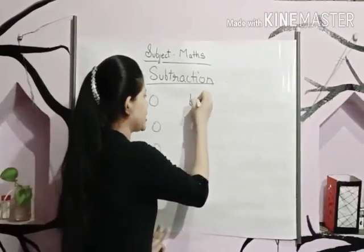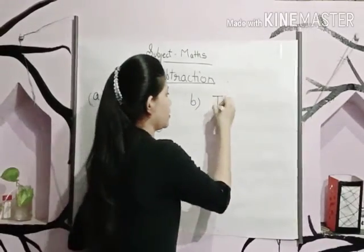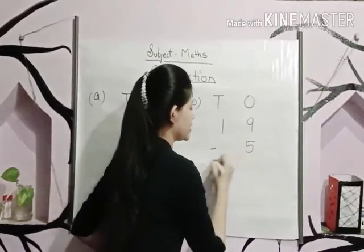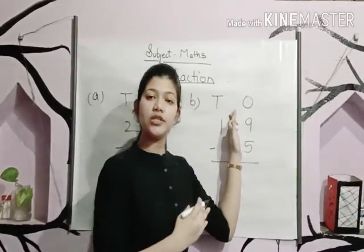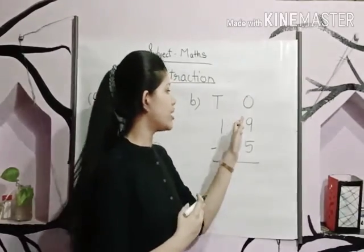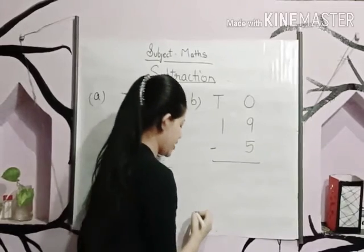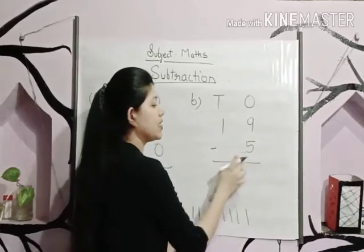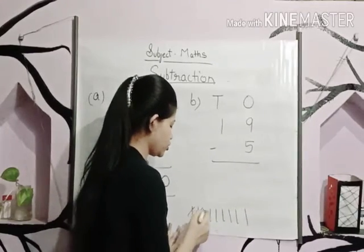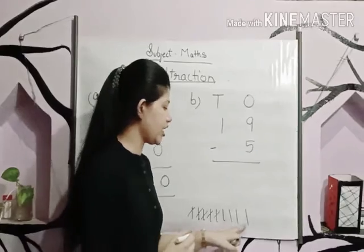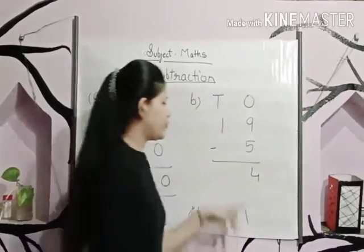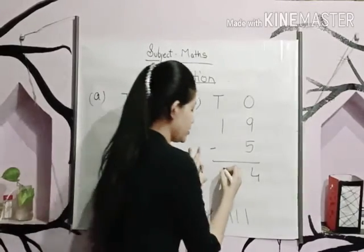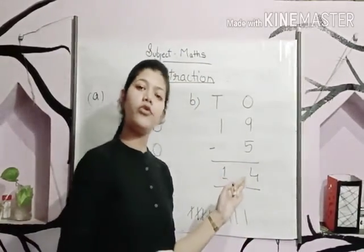Let's have one more example: nineteen minus five. Let's subtract the ones column first — nine minus five. We draw nine lines and subtract five, leaving four. Now there is no number to subtract in the tens column, so we copy the one. The answer is fourteen.